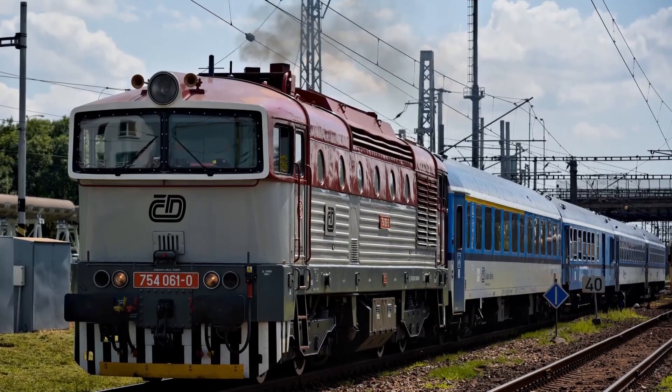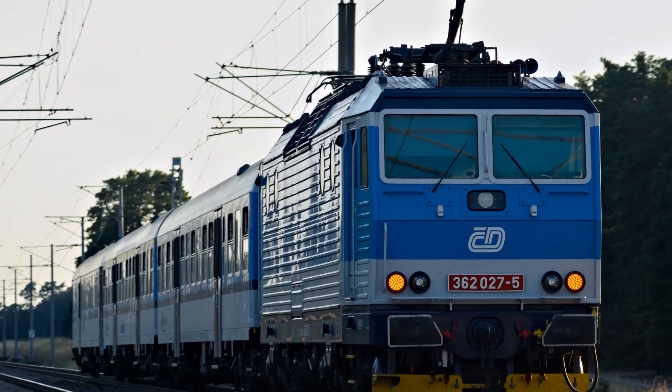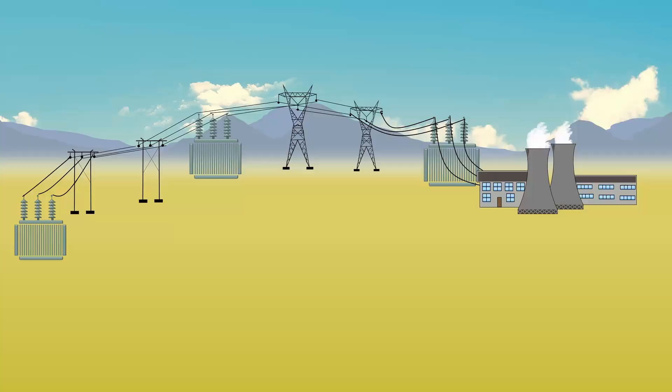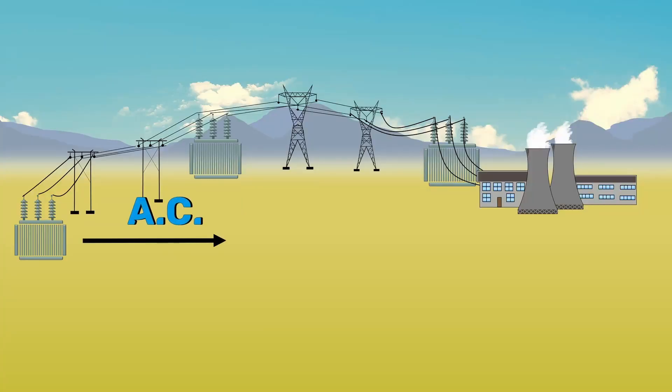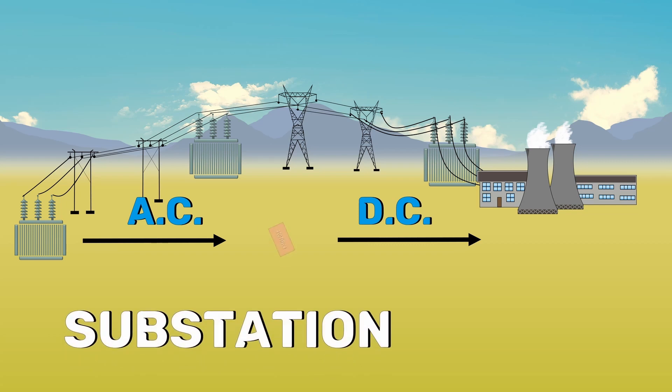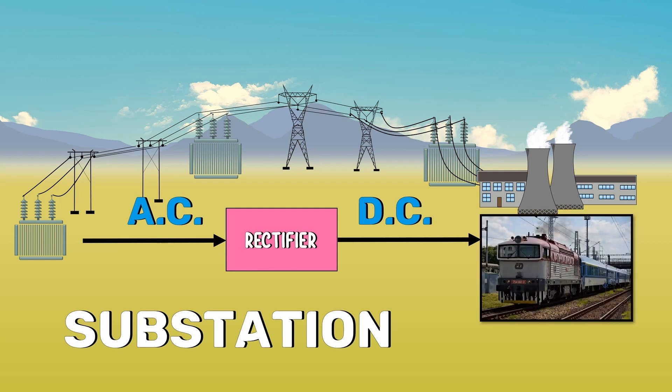Electric traction is one of the examples where DC supply is used. For this purpose, AC power is converted into DC power at the substation using rectifiers. The DC supply from the substation is conveyed to the required places for distribution.